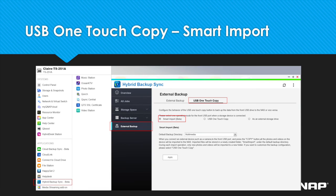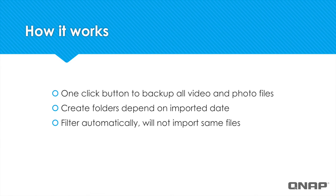So, to backup from your mobile device directly to your NAS, you can use the USB OneTouch Copy button. To do this, you're going to open up Hybrid Backup Sync, click on External Backup, click USB OneTouch Copy, and select Smart Import, and then click Apply. Now, you'll be able to backup all of the photo and video files from your mobile device with the touch of a button.